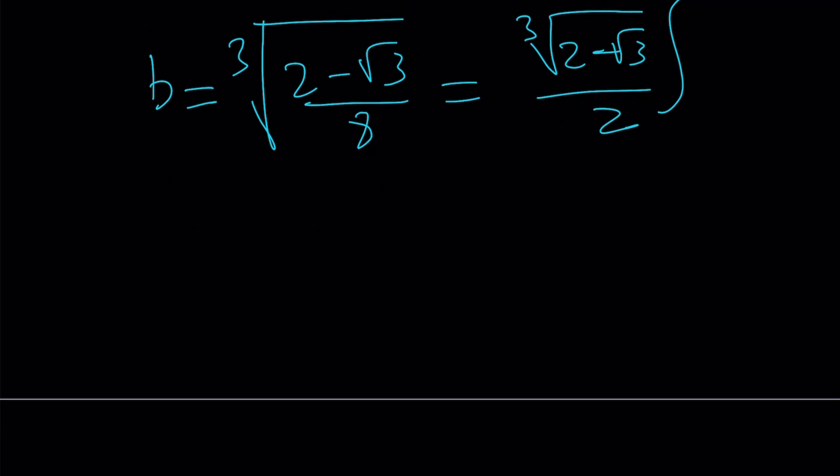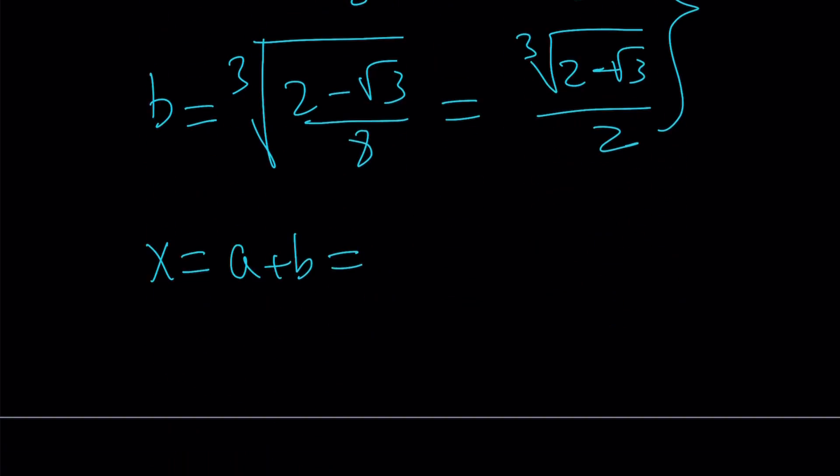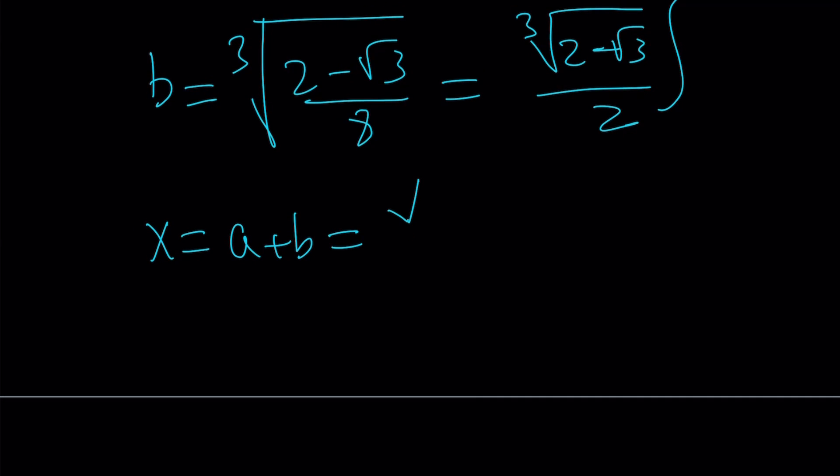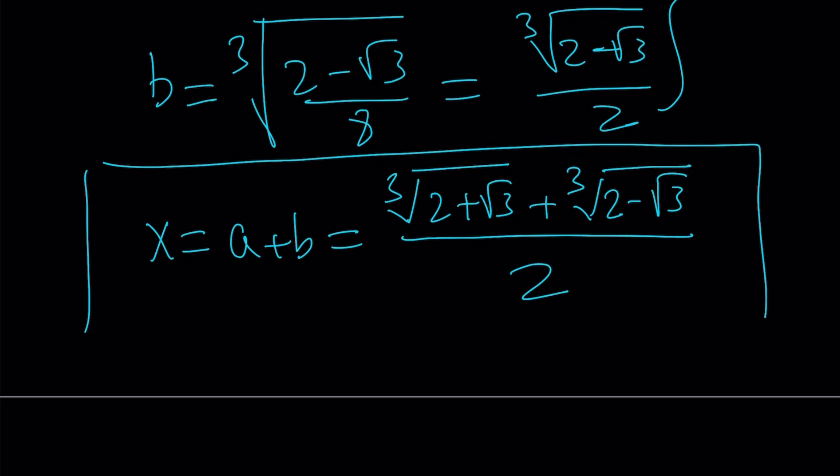Since X is equal to A plus B, now we can find our X value from here. Uh-oh, something is coming up too soon. So let's go ahead and write X as A plus B. And that just gives me, since they have a common denominator, X becomes the cube root of 2 plus root 3 plus the cube root of 2 minus root 3 divided by 2. And that gives me the real value of X, but are there any other real solutions, and how can we find out?